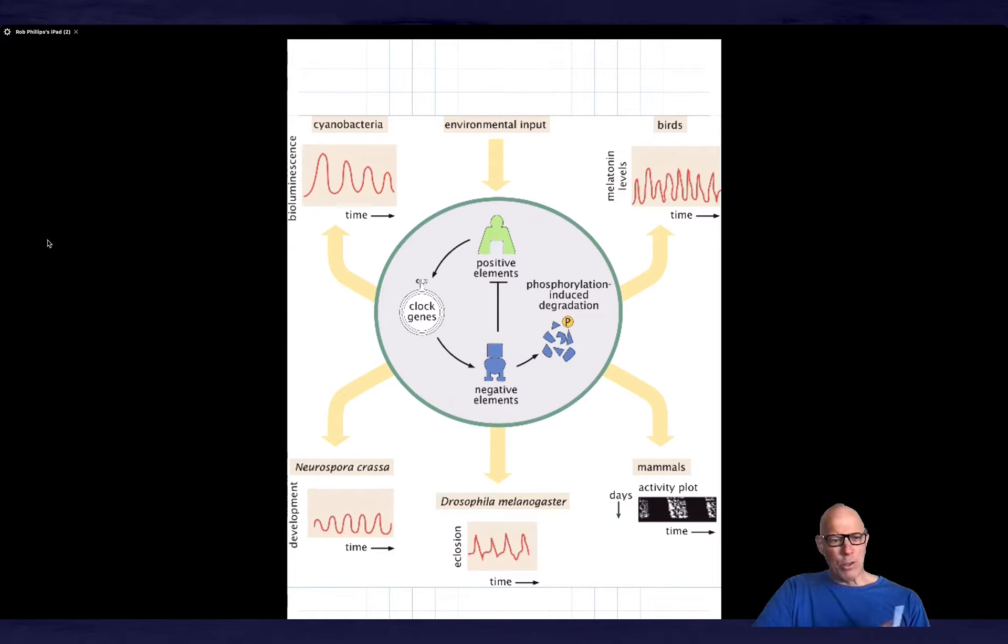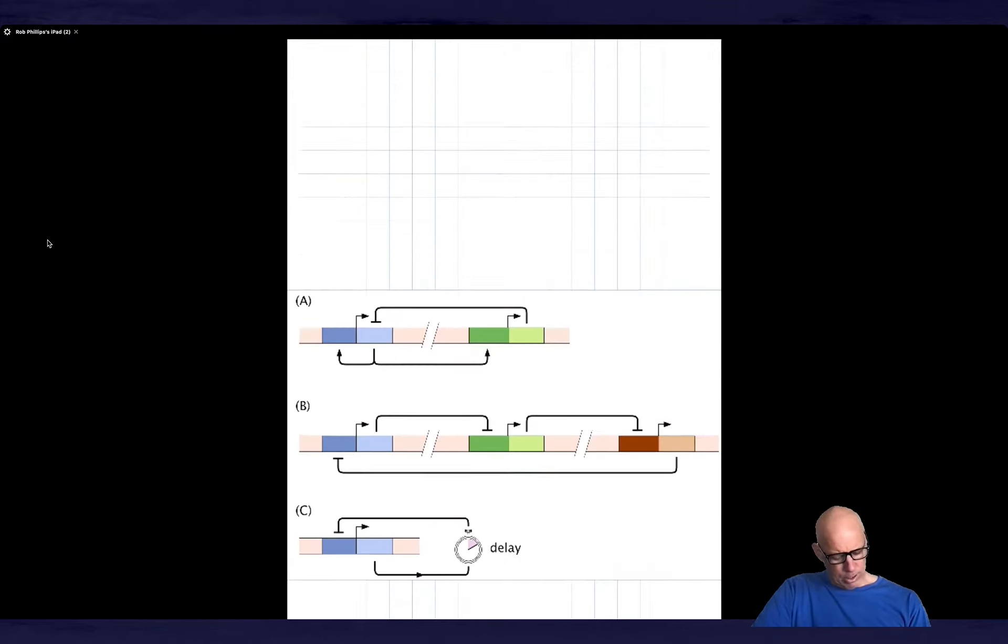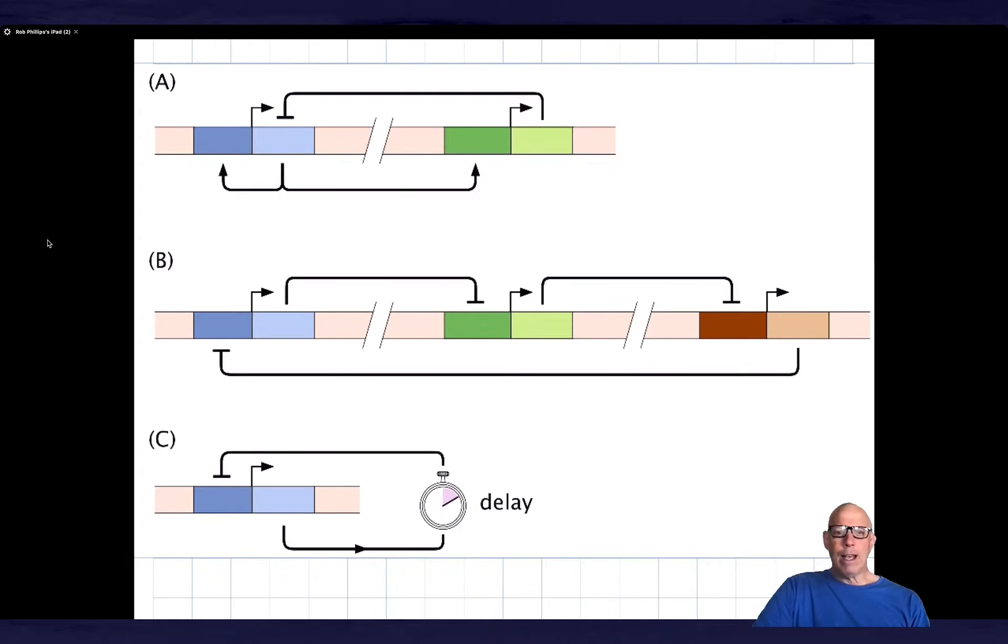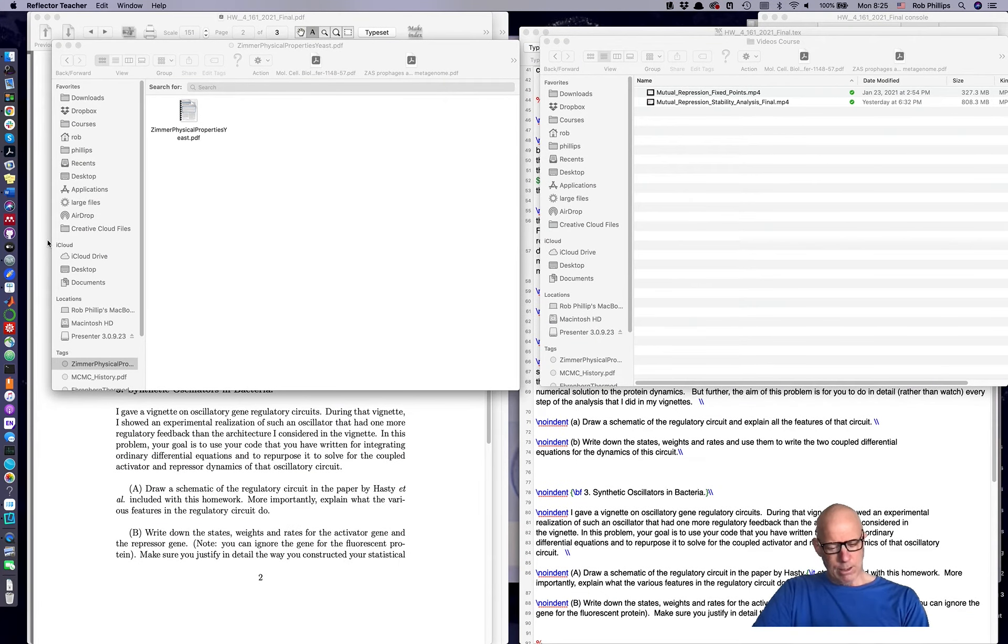What we're going to do is pursue this question from the standpoint of genetic circuits, although there's other examples that could be just as fun. And the three examples that I wanted to show you are shown here. So the top one is that we have an activator which activates itself. It activates a repressor. And the repressor represses activator.